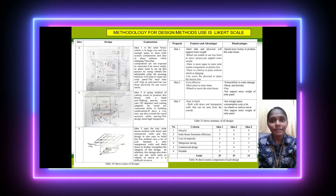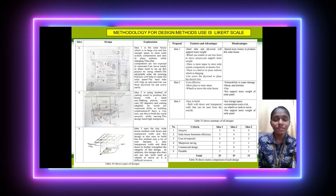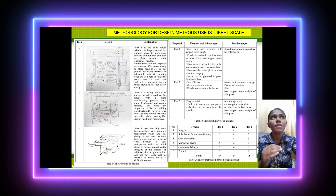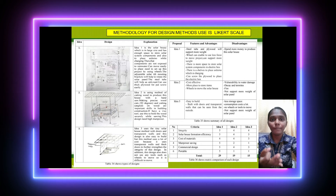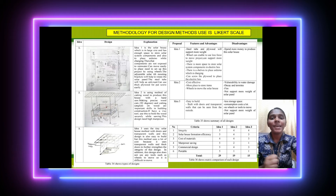We can clearly see that concept one has many advantages over ideas two and three, while ideas two and three have more disadvantages. The decision to choose the design uses the criteria matrix method based on specific criteria such as integrity, solar house formation, efficiency, cost of material, manpower saving, commercial design, and portability. The total criteria matrix score: idea one is 29, idea two is 19, idea three is 15. Idea one has the highest score and is therefore selected.